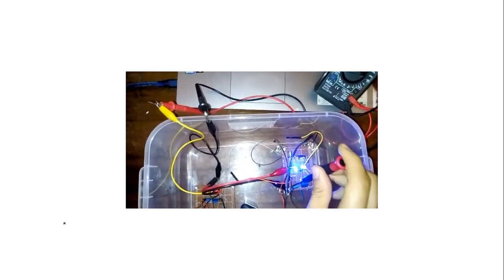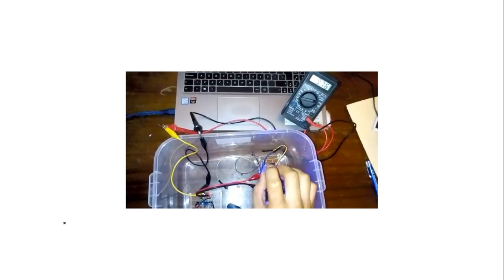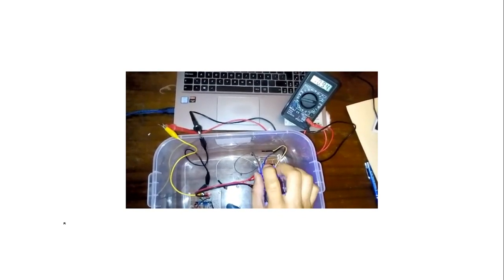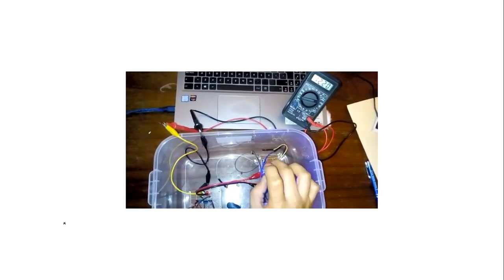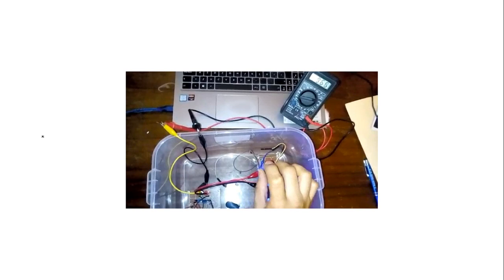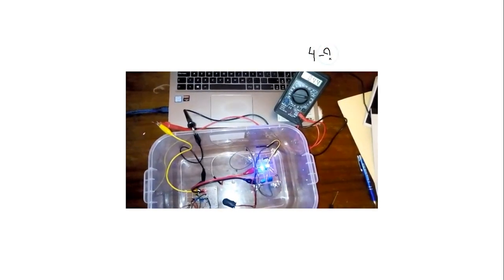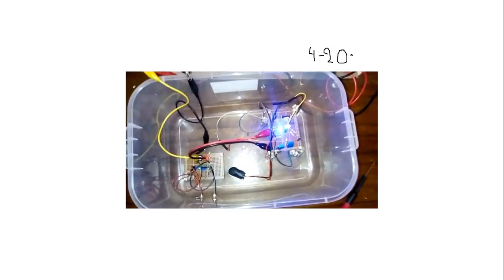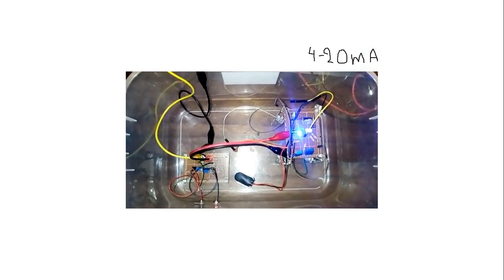Here I am adjusting the potentiometer. As you see, here we have 10 milliamps, 11 milliamps, 12 milliamps, the opposite, 10 milliamps. So this is from 4 to 20 milliamps. This is the circuit of 4 to 20 milliamps.